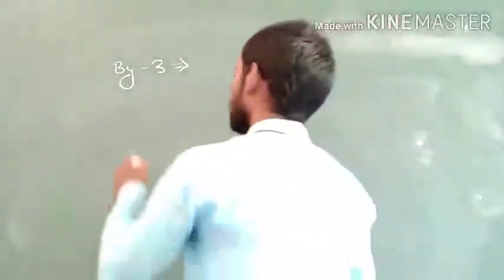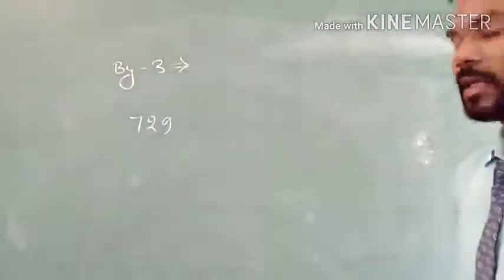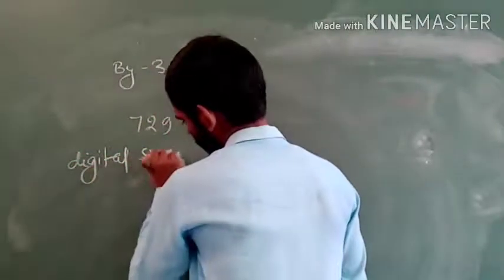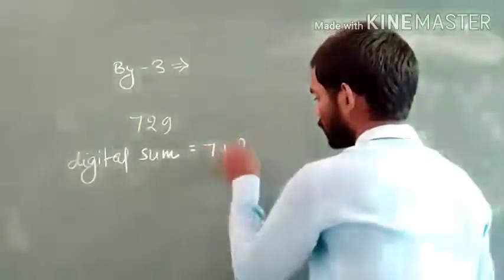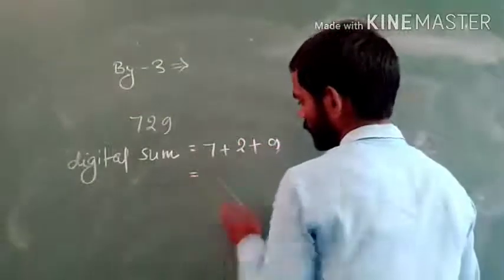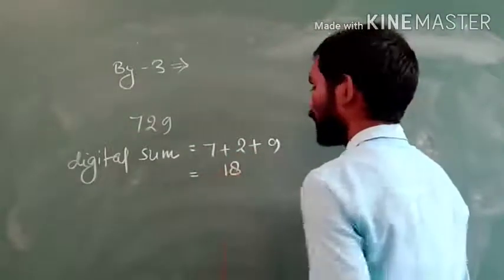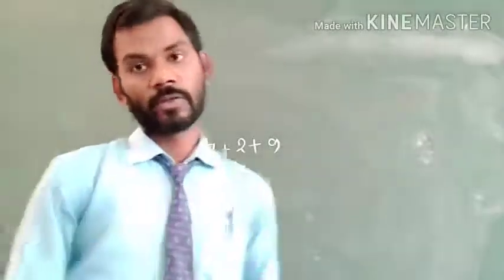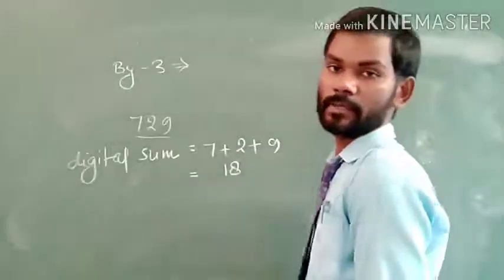So let us suppose 729 is a given number. We have to find out its digital sum. Its digital sum will be 7 plus 2 plus 9, which is equal to 18. And 18 is the sixth multiple of 3. So the number 729 is divisible by 3.